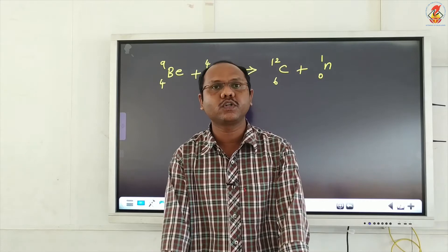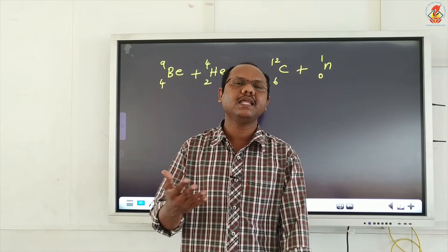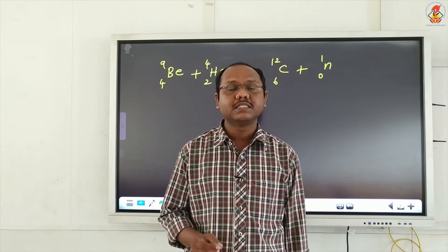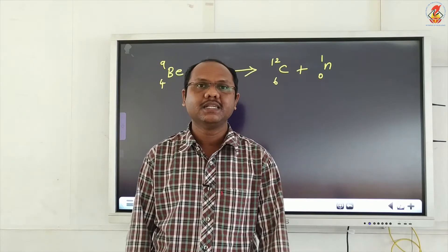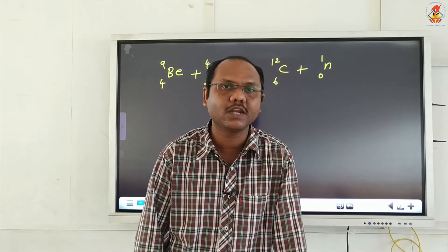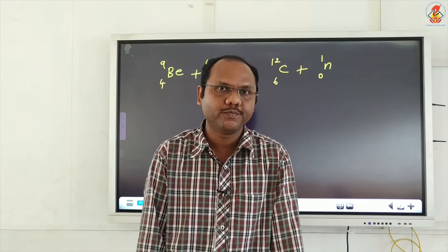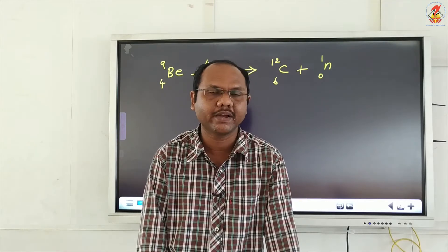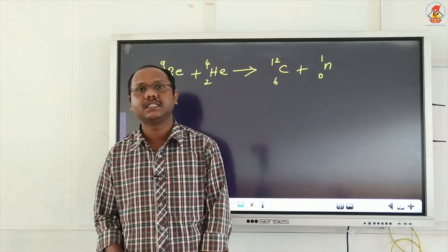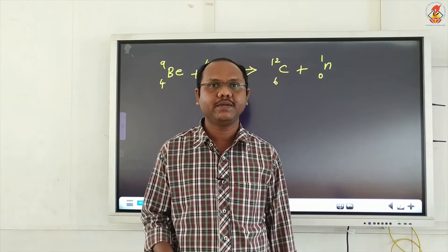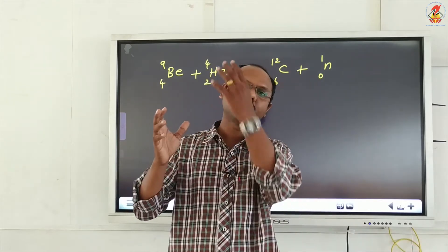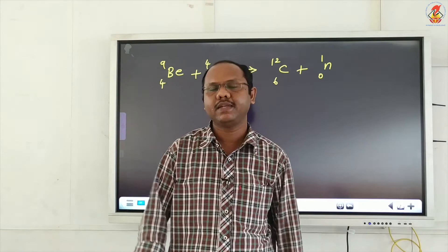The third point: the neutron's mass is slightly greater than the mass of the proton — we discussed that already. Next, since the neutron is neutral, it has very less ionizing power. Neutrons cannot ionize the gas when they pass through it. As a result, neutrons can introduce radioactivity in many elements. If I take a stable element and hit it with neutrons, it can induce radioactivity in that element.